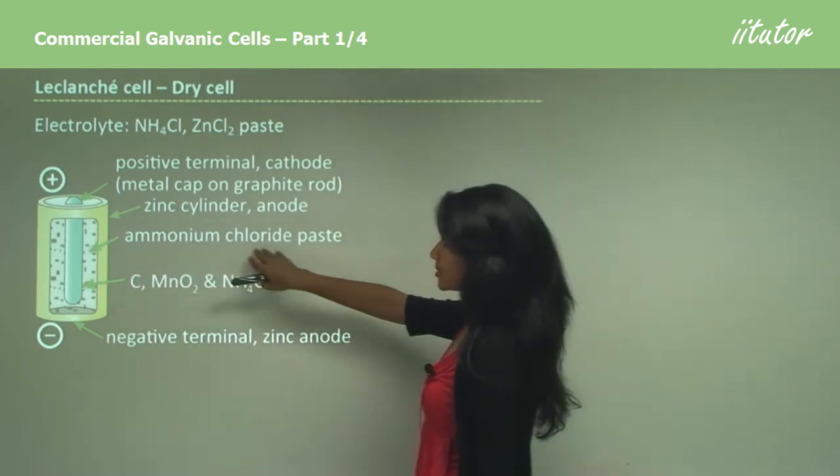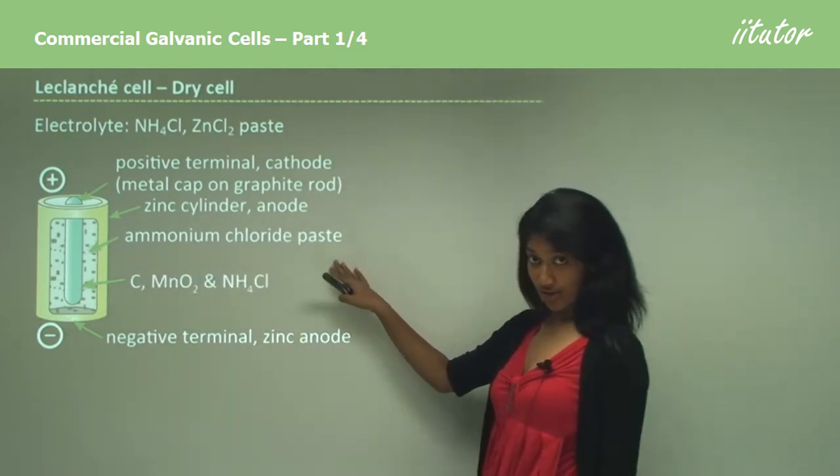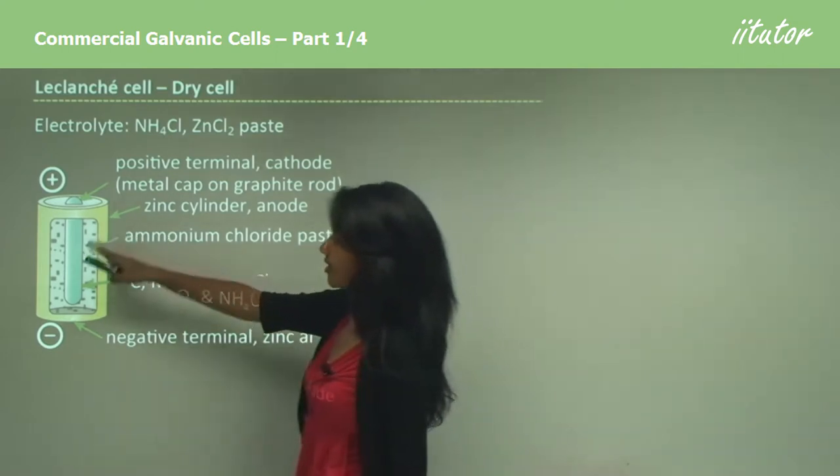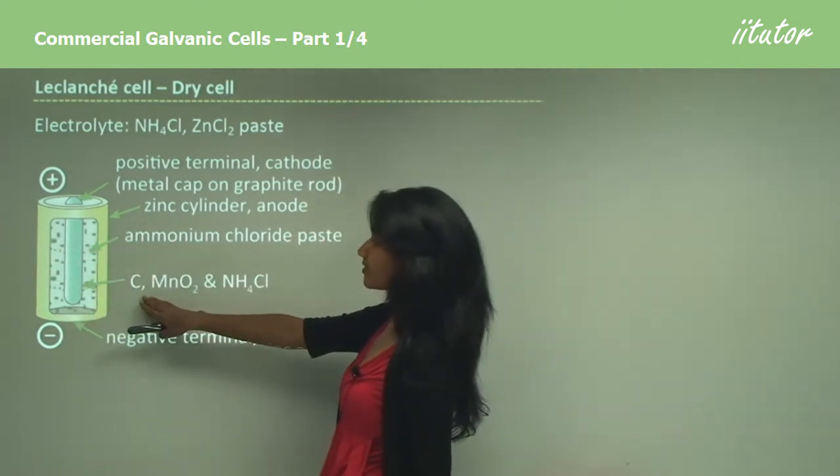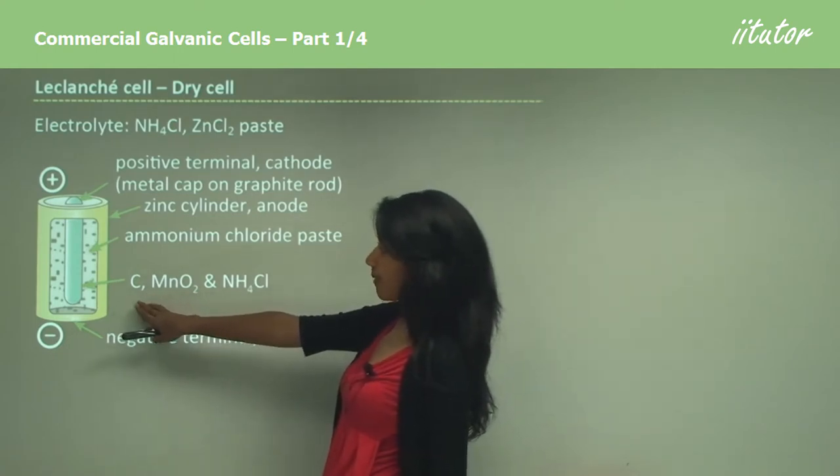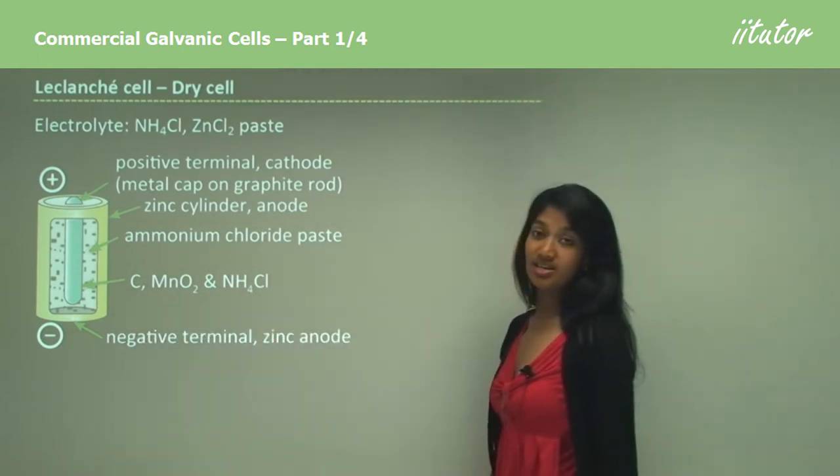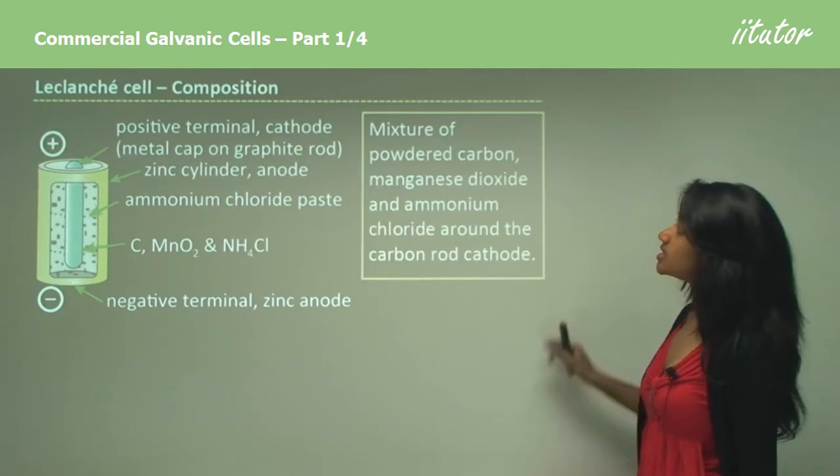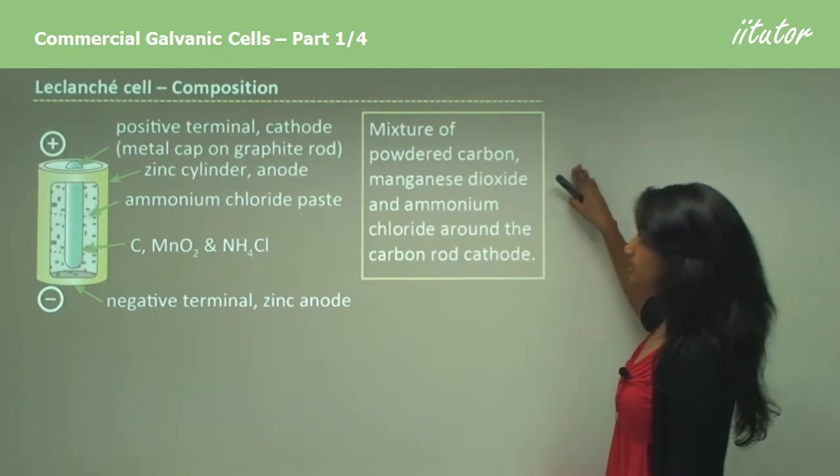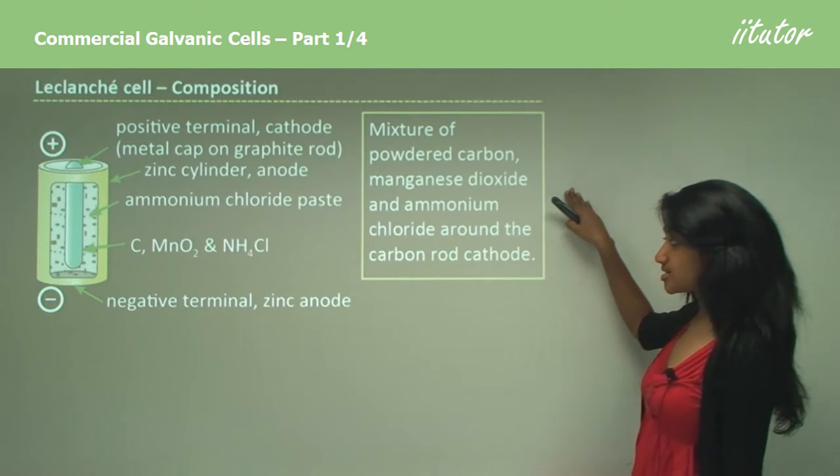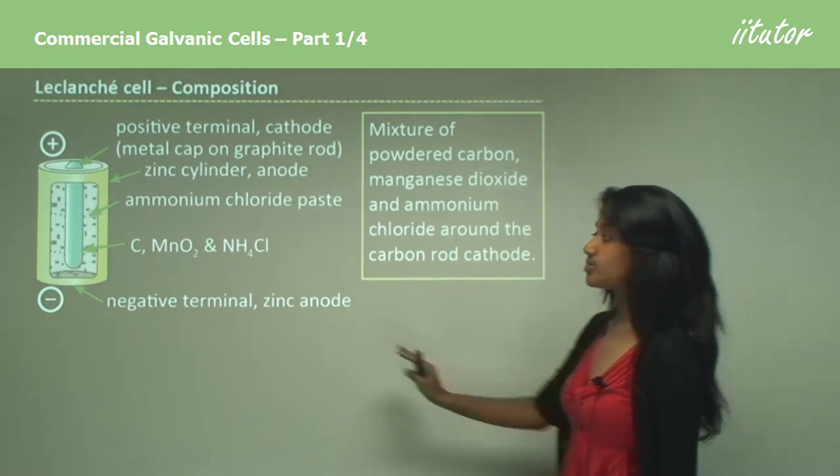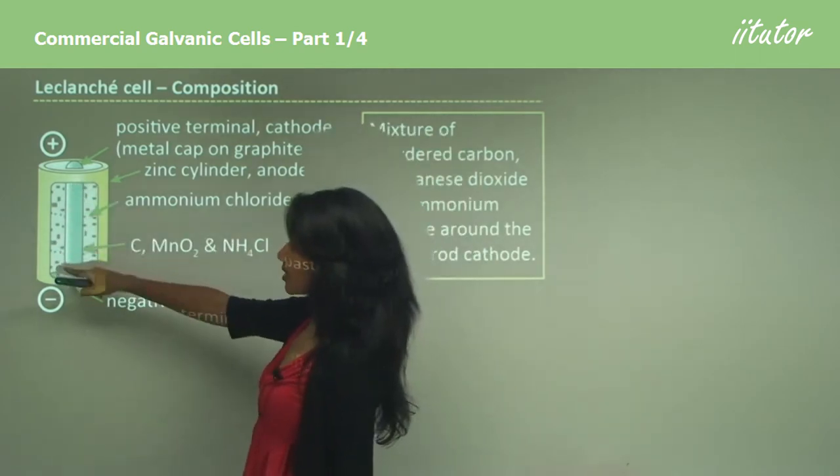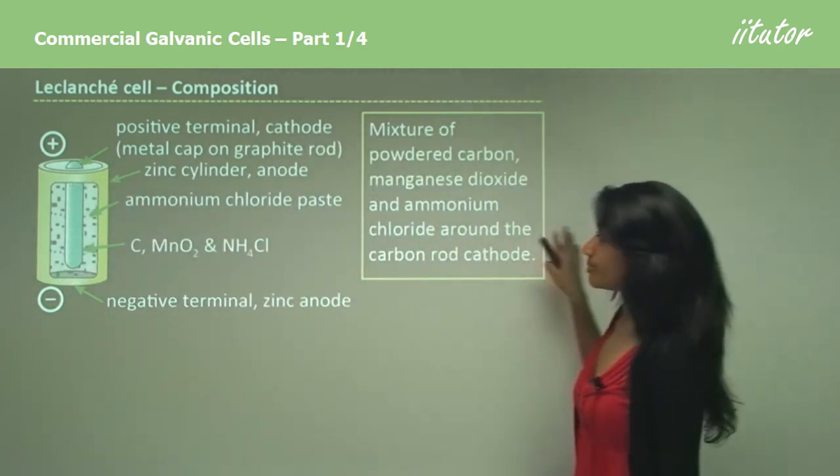The electrolyte, which is ammonium chloride, zinc and zinc chloride in a paste, is around the cathode. And also we have the cathode coated with carbon, manganese dioxide and ammonium chloride. So a mixture of powdered carbon, manganese dioxide and ammonium chloride around the carbon rod, which is a cathode. So here we have a coat of the manganese mixture.